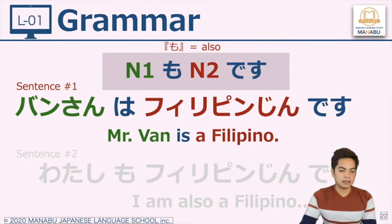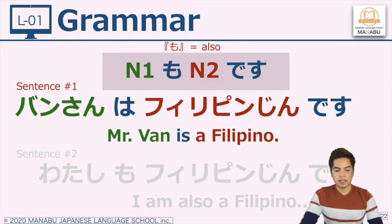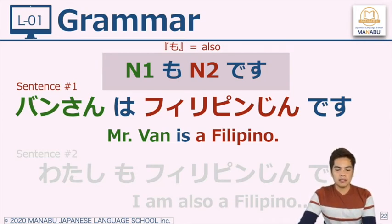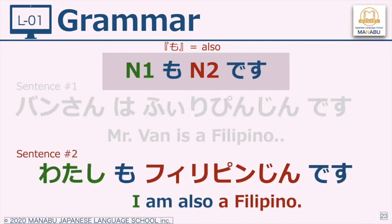Another example: Van-san wa Filipinjin desu — Mr. Van is a Filipino. You will expect that the person described in sentence 2 has the same characteristic as Van-san. He is also a Filipino. So: Watashi mo Filipinjin desu — I am also a Filipino.